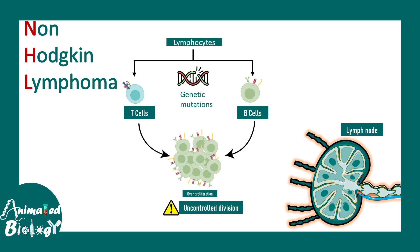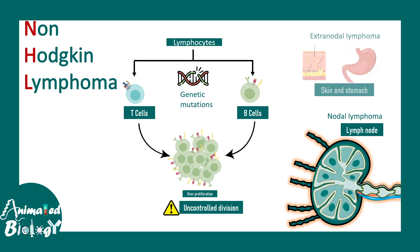Another site where these problems occur is the lymph node. Once there are too many B lymphocytes or T lymphocytes the lymph node will become enlarged — that's what is seen in non-Hodgkin's lymphoma. Externally one can see these swollen lymph nodes creating a lump in different regions of the body. This is known as nodal lymphoma. Just like nodal lymphoma there are extranodal sites, for example skin, stomach, and other places.